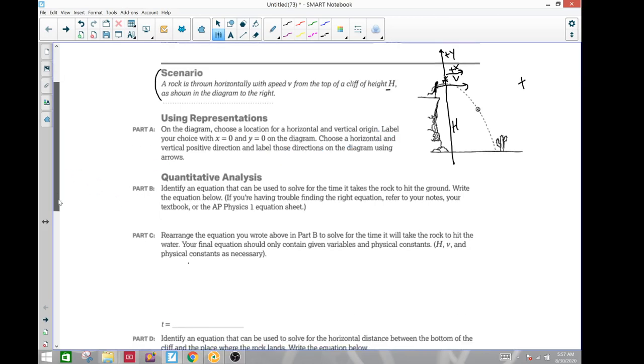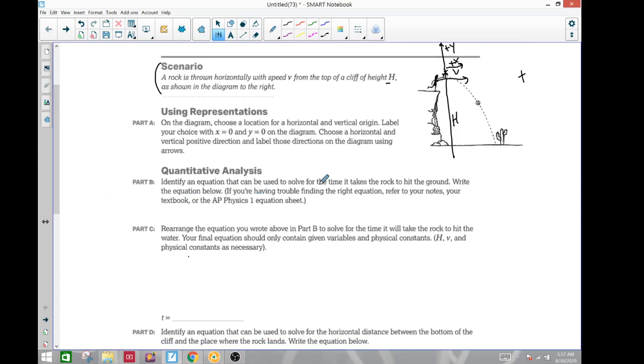Part B. Identify the equation that can be used to solve the time it takes the rock to the ground. Write the equation below. If you're having trouble, check your equation sheet. Finding what equation to use is really a big part of this class. So my main two formulas are x equals xi plus vit plus one half at squared and vt equals vi plus at. In this one, they're not really saying yet in what terms or what variables. They just want them to say find time.